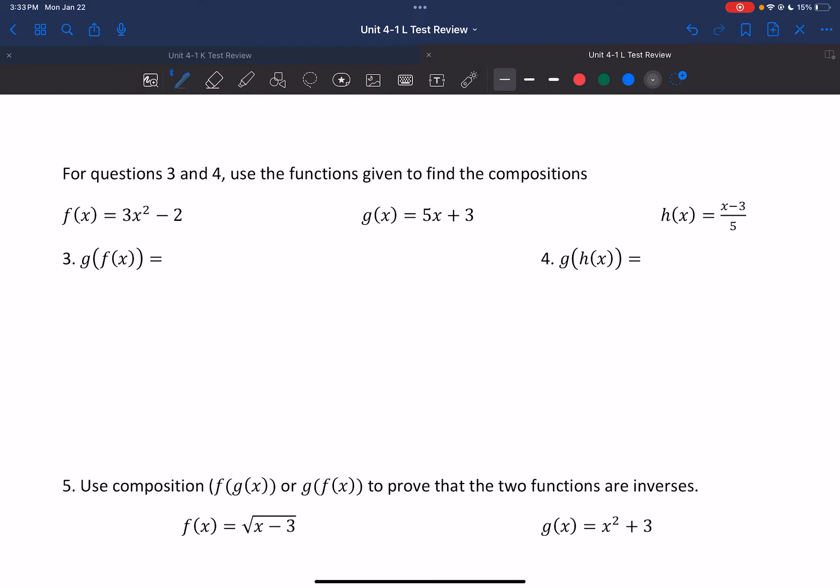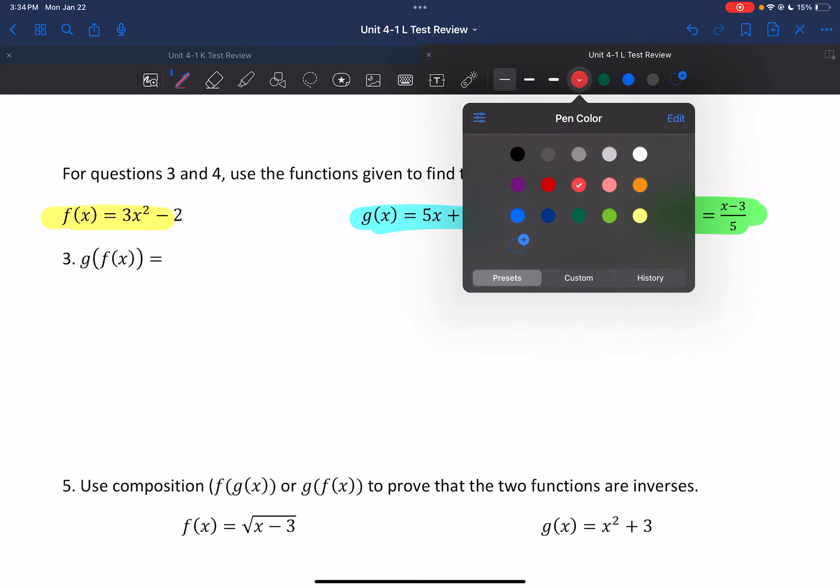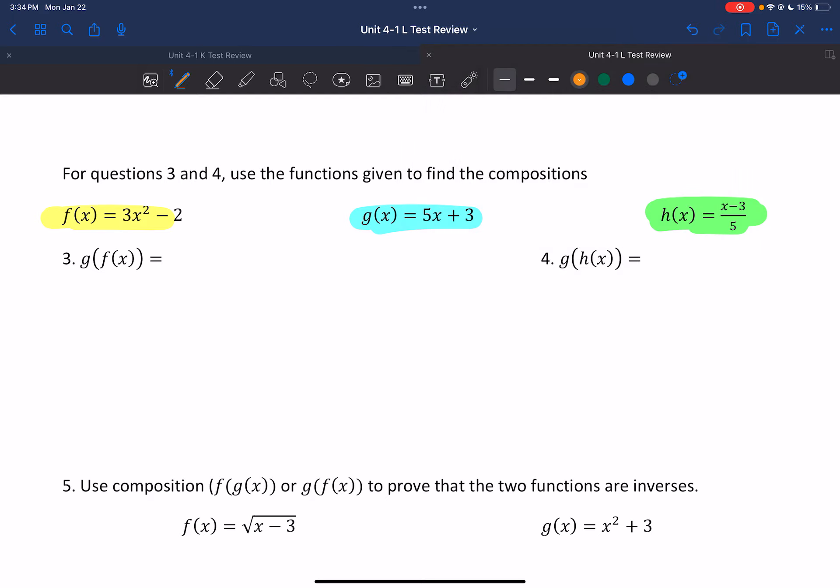Now we want to do some compositions of functions here. So I'm going to put a function inside another function. So let's start with the first one. We have f, we have g, we have h, and I have colors for all of them. Cool. So the first one has g on the outside. Now the g function is 5x plus 3. The inside is 3x squared minus 2.